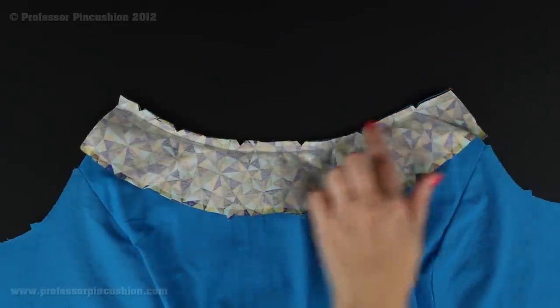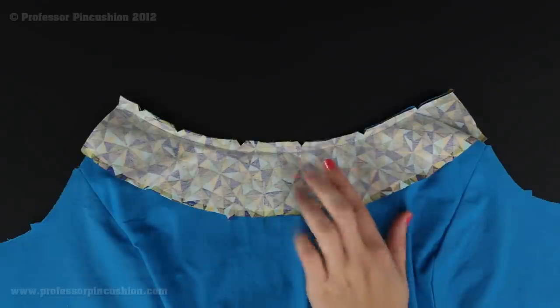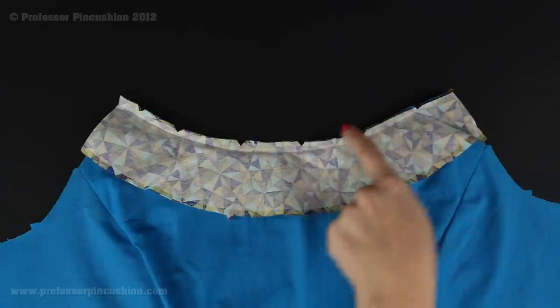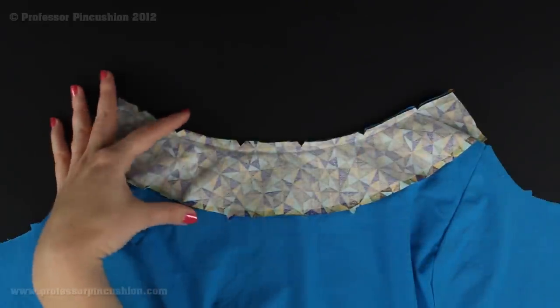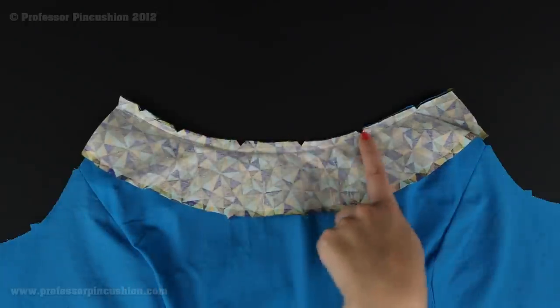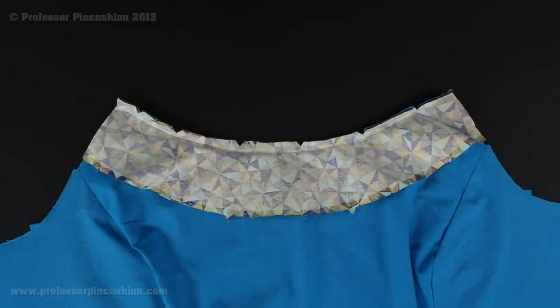Once I've attached my neck facing to the neckline of my bodice, for prepping for the understitch, the first thing you're going to do is trim your seam allowance so we don't have as much bulk underneath our facing. You're also going to want to trim these little notches, which we always do whenever we have a curved area, just so it lies a little bit more flat.